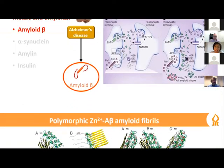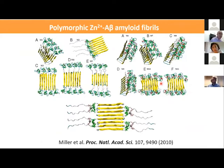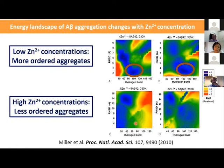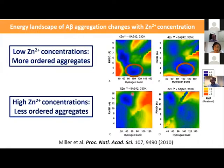We previously investigated polymorphic zinc amyloid beta fibrils at different concentrations and different metal binding sites. One highlight of this work was that at low zinc concentrations, there are more ordered aggregates, with relatively low RMSD values and relatively high numbers of hydrogen bonds. However, at high zinc concentrations, there are fewer aggregates — increasing zinc concentration actually decreases amyloid beta aggregation and A-beta fibrillation.